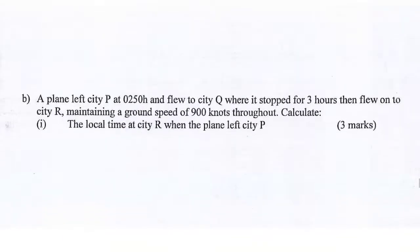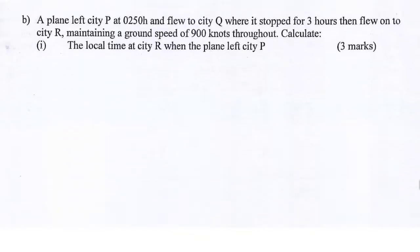Part B: A plane left city P at 02:50 hours and flew to city Q, where it stopped for 3 hours, then flew on to city R, maintaining a ground speed of 900 knots throughout. Calculate: 1. The local time at city R when the plane left city P. 2. The local time to the nearest minute at city R when the plane landed at R.